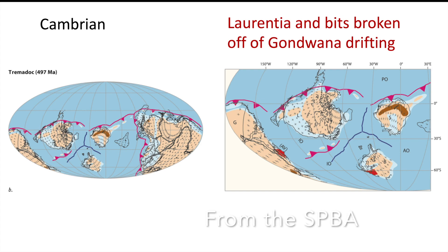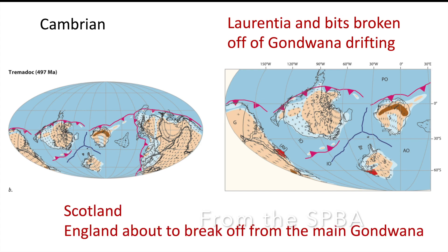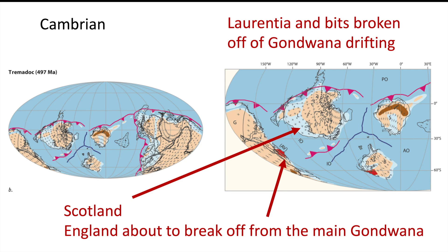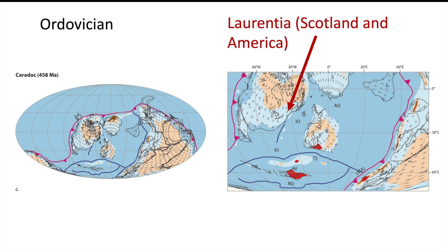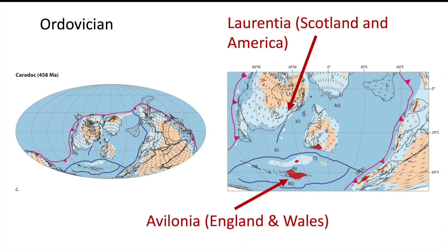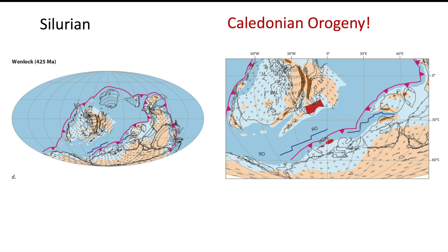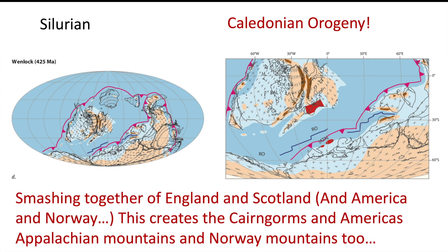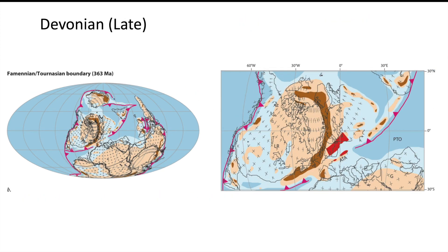Looking at these diagrams: Scotland is on the Laurentia bit, and so is America. England is on the Gondwana bit, yet to break away. Here we see them starting to drift together — Scotland versus England. They come together further and now they're actually touching. This is the Caledonian Orogeny, creating the Cairngorms and the Appalachians. And here we can see some of the sliding happening.